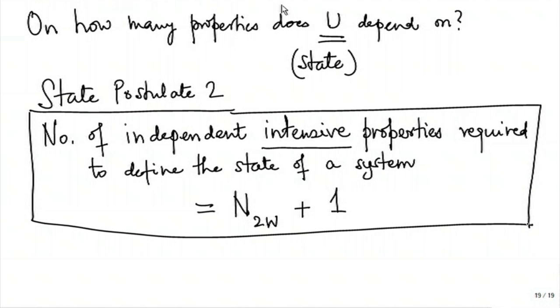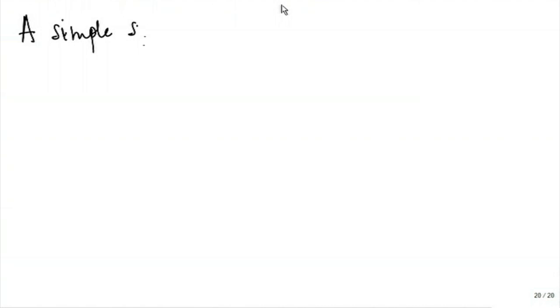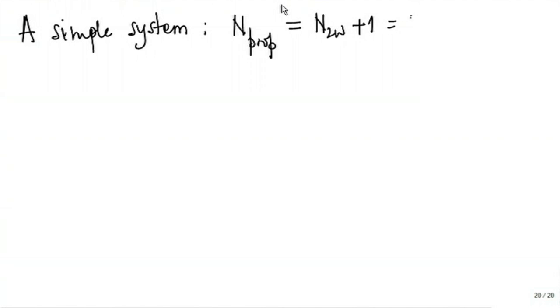State postulate one was that the state of a system can always be defined in terms of primitive properties — thermodynamics did not tell us which ones or how many. Now we have the answer: find out the number of two-way work modes and add one. For a simple system, that is one two-way work mode plus one, which equals two independent intensive properties.